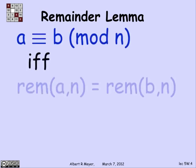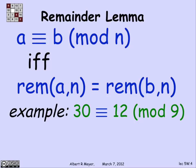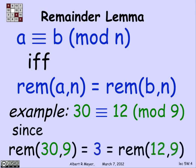Another way to understand congruence is the so-called remainder lemma, which says that a is congruent to b mod n if and only if a and b have the same remainder on division by n. For example, 30 is equivalent to 12 mod 9 because the remainder of 30 divided by 9 is 3 — since 3 times 9 is 27, remainder 3 — and the remainder of 12 divided by 9 is also 3. By the way, the three-bar equivalence sign means both 'equivalent' and 'congruent' — I'll use both pronunciations interchangeably.